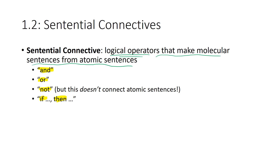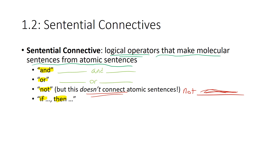The most unique sentential connective listed here is actually NOT, which we might call the negation or complement. It's unique because it doesn't connect atomic sentences — NOT only attaches itself to a single sentence, whatever that sentence happens to be, whether short or long, atomic or molecular. The NOT simply denies that sentence; it tells us that sentence is not the case. On the other hand, AND, OR, and IF-THEN connect two distinct sentences — for example, 'this sentence AND this sentence,' 'this sentence OR this sentence,' or 'if this sentence, then this sentence.'